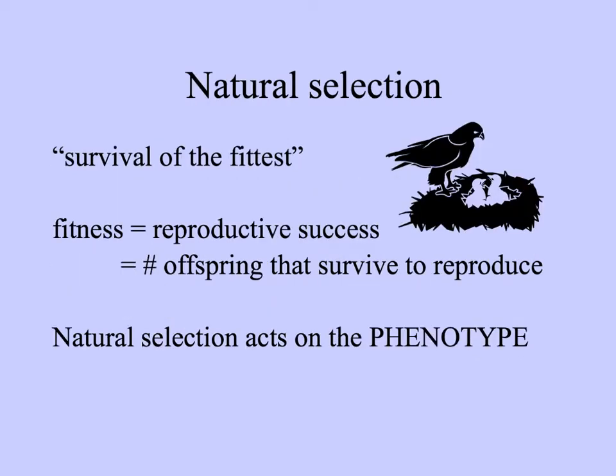Natural selection is often described as survival of the fittest, where fitness is equal to reproductive success. In other words, for any individual, fitness is the number of its offspring that in turn survived to reproduce. So even though adaptations may be genetically determined, natural selection acts not on the genes but on the expression of the genes — on the phenotype.